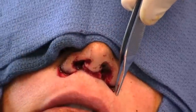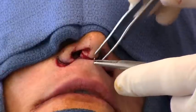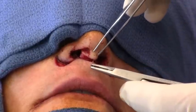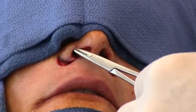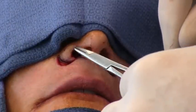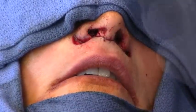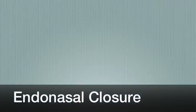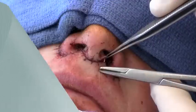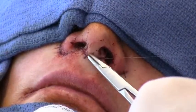A caudal subalar resection enables lateral lifting. The skin is sutured with 6-0 Prolene. The remaining closure is performed using 5-0 chromic in a simple interrupted technique.